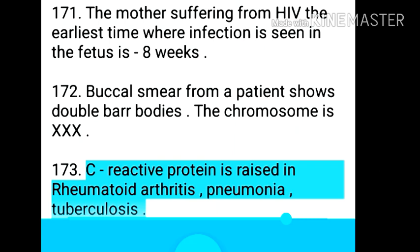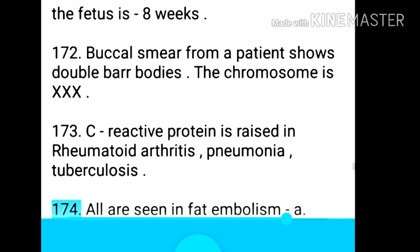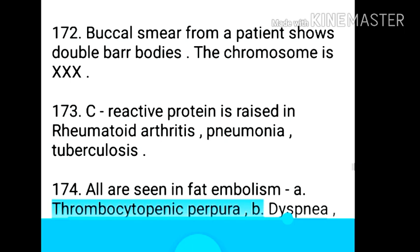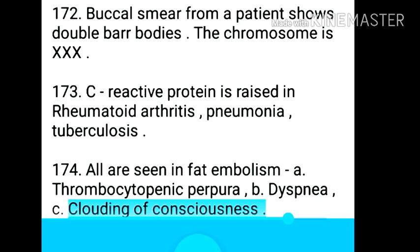Point 174: C-reactive protein is raised in rheumatoid arthritis, pneumonia, and tuberculosis. Point 175: All are seen in fat embolism — thrombocytopenic purpura, dyspnea, and clouding of consciousness.